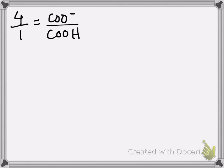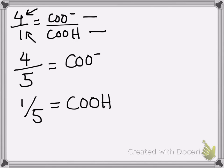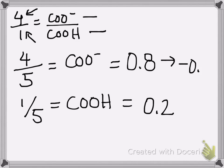The other way is to think that there are 4 COO⁻ for every 1 COOH that you have. So 4 parts of this and 1 part of this gives you a total of 5 parts: 4 of every 5 parts is COO⁻, and 1 of every 5 parts is COOH. That ends up giving you the same answer from the other method. It's a little faster, but go with whatever method makes most sense to you.